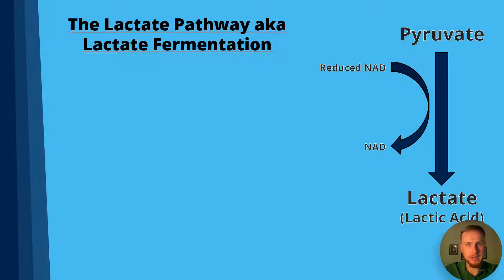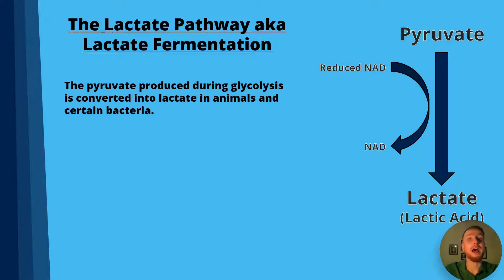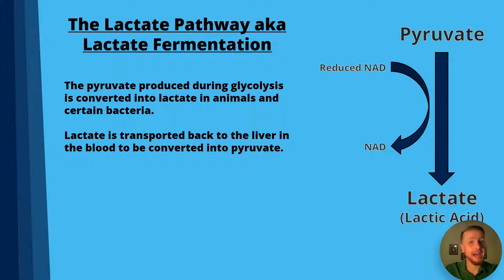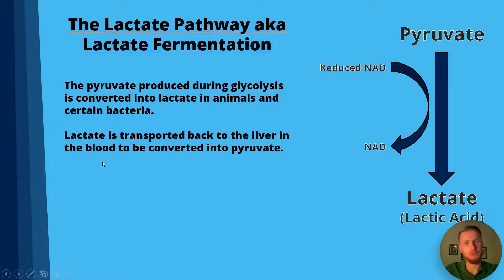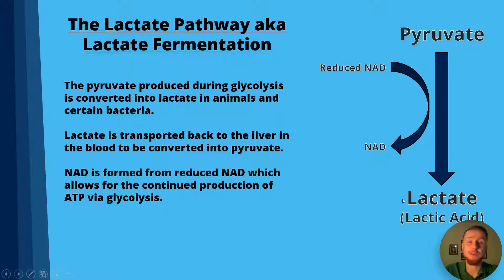The lactate pathway is also known as lactate fermentation and it occurs in animals and certain bacteria. In mammals, lactate is transported back to the liver in the blood where it is reconverted back into pyruvate. NAD is regenerated from reduced NAD, which allows the continued production of ATP via glycolysis. In the reaction, pyruvate is converted to lactate and reduced NAD is converted back to NAD. Remember: glycolysis cannot occur without NAD to act as an oxidizing agent.